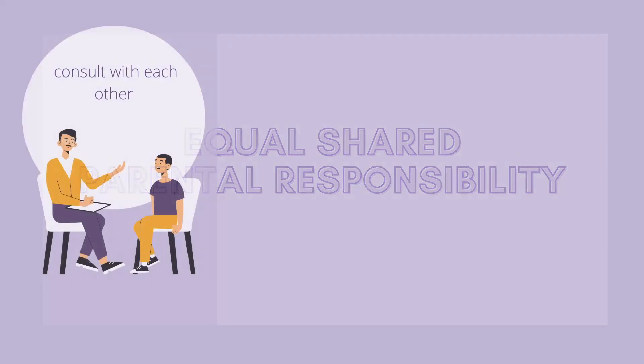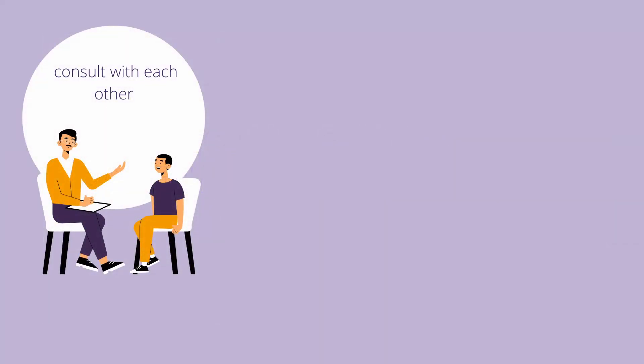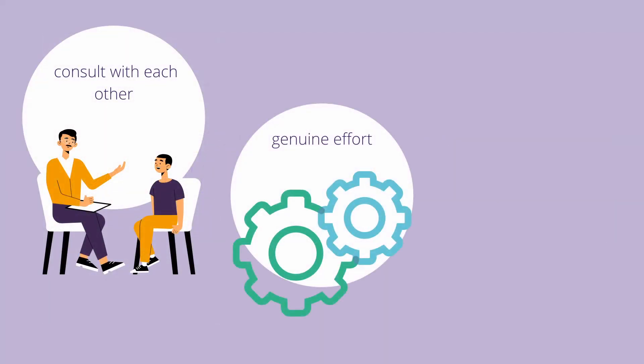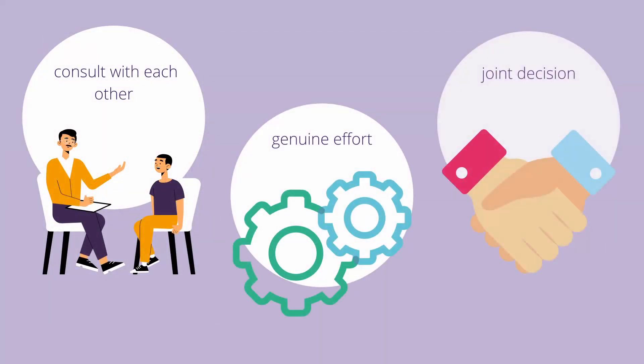Equal shared parental responsibility requires that parents consult with each other and make a genuine effort to come to a joint decision about certain issues. This responsibility can be shared between two or more people — for example, it could be shared between a parent and two grandparents.